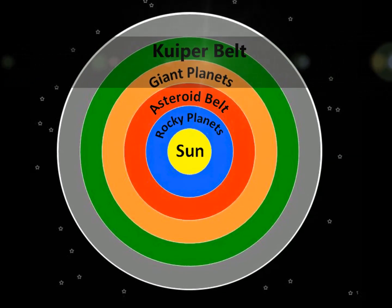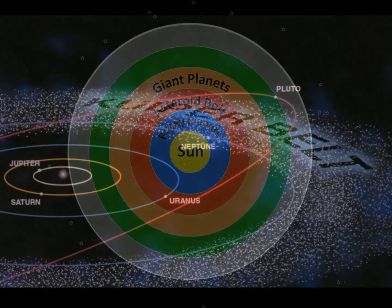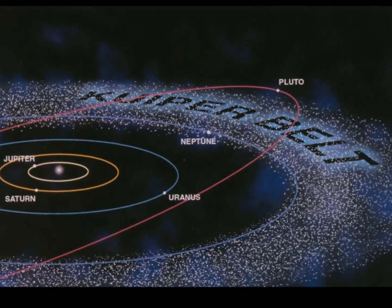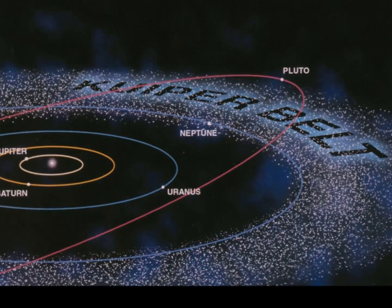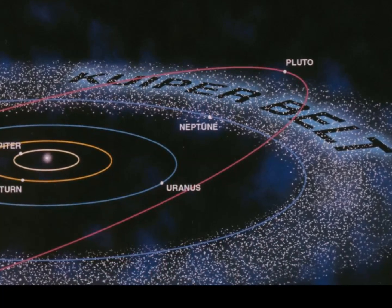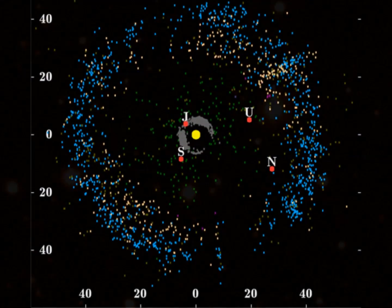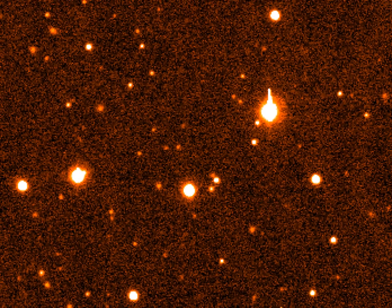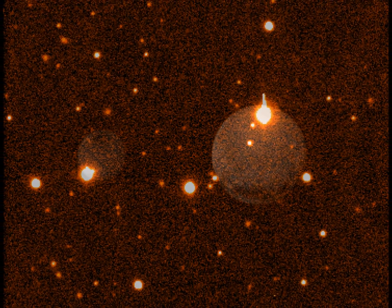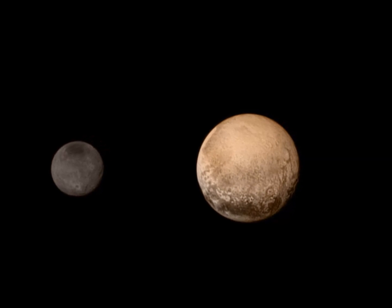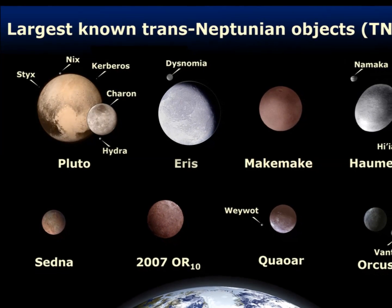The Kuiper belt, named for astronomer Gerard Kuiper, is a newly observed and explored region beyond Neptune where thousands of small icy objects and large dwarf planets travel in elliptical and tilted orbits. This ring contains many comets that orbit the Sun. Pluto naturally fits in the Kuiper belt alongside other objects that share the same characteristics.